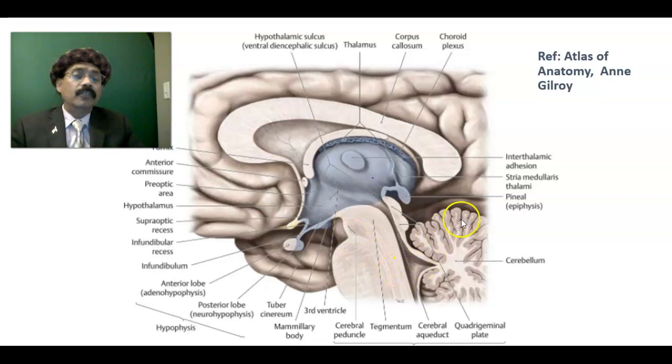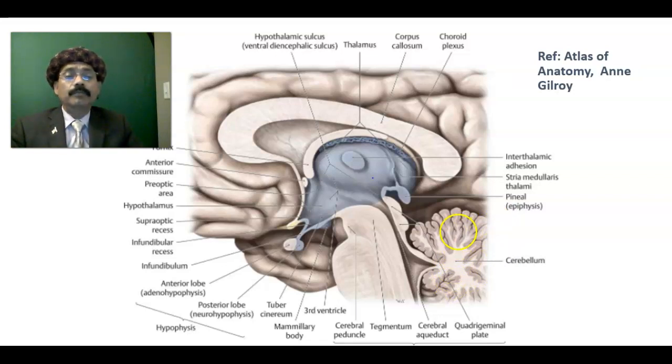The white matter of the cerebellum is called the arbor vitae, or tree of life.